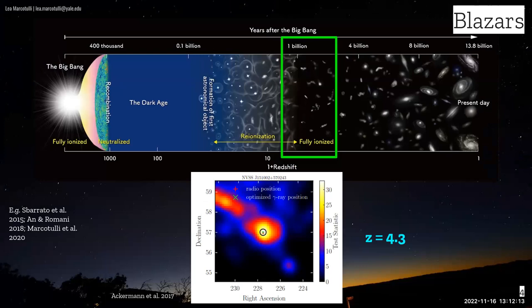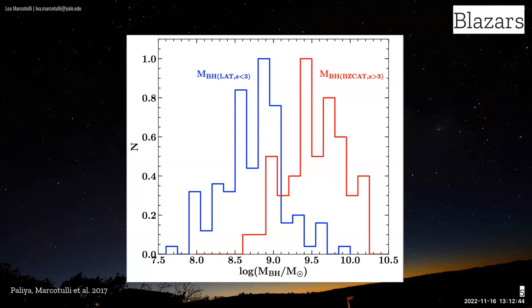These sources are so powerful we can detect them up to very high redshifts, when the universe was barely one to two billion years old. The highest redshift gamma-ray detected blazer was found at redshift 4.3; now there's another at 4.7. Not only that — blazars found below redshift 3 have masses averaging around 10^8.5 to 10^9 solar masses, but those detected above redshift 3 have on average 10^9.5 solar mass black holes — extremely massive black holes extremely early in cosmic history. How did these black holes grow so big so fast?